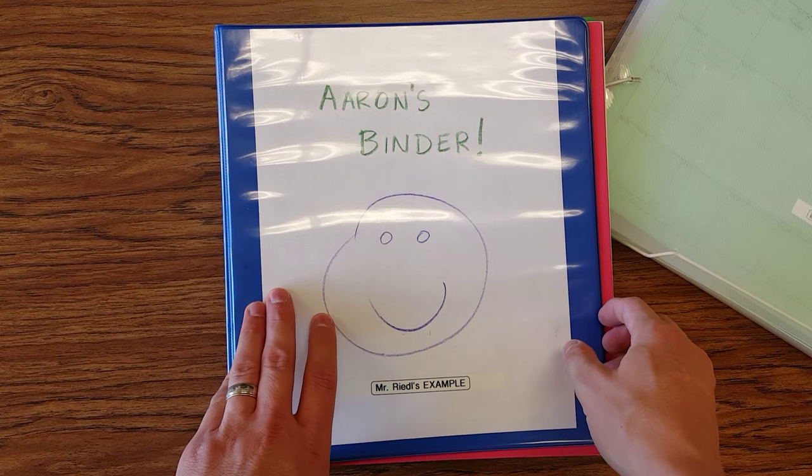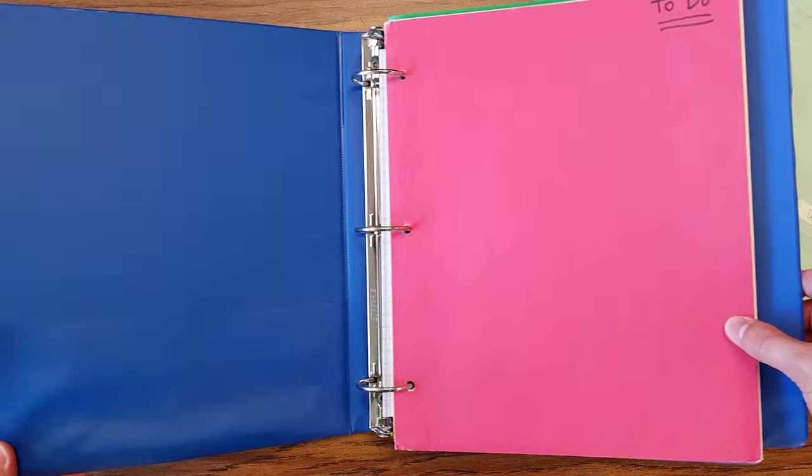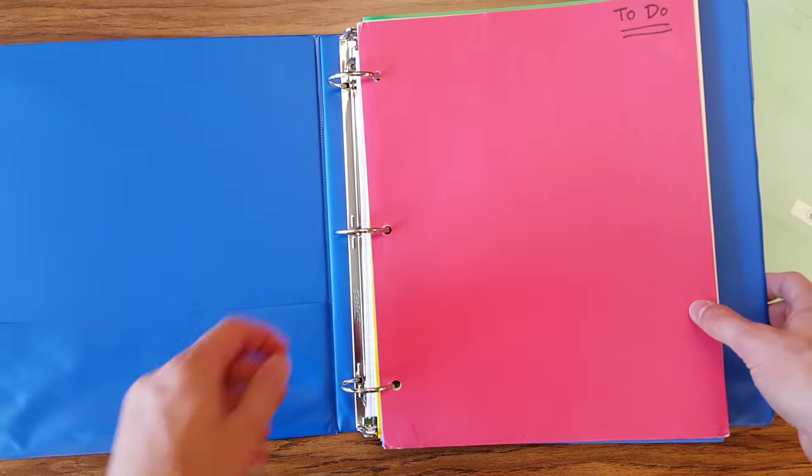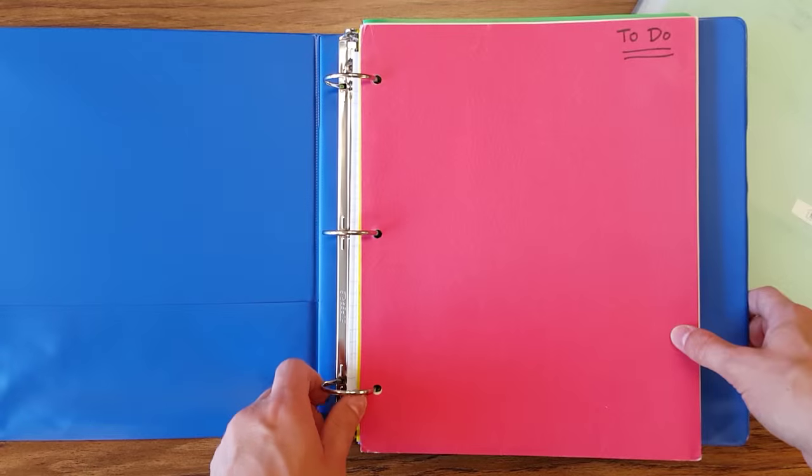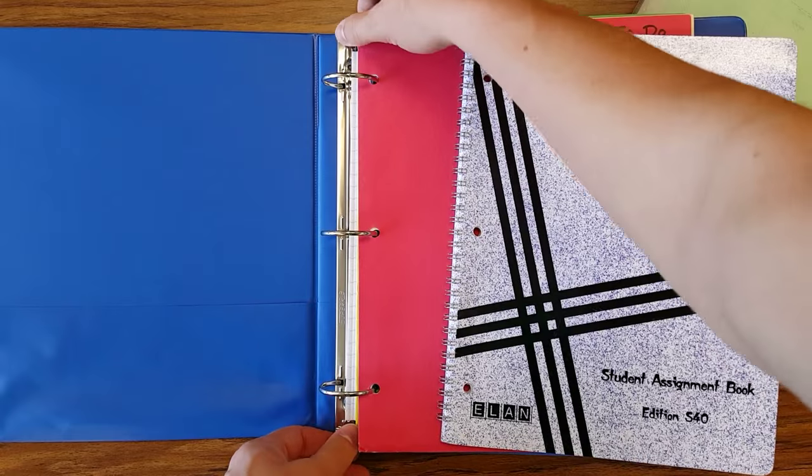Okay, let's start with the binder. Binders have been around for a long time and they're very popular, mainly because they can open and close, they have the three rings, and for the most part, they stay very secure.